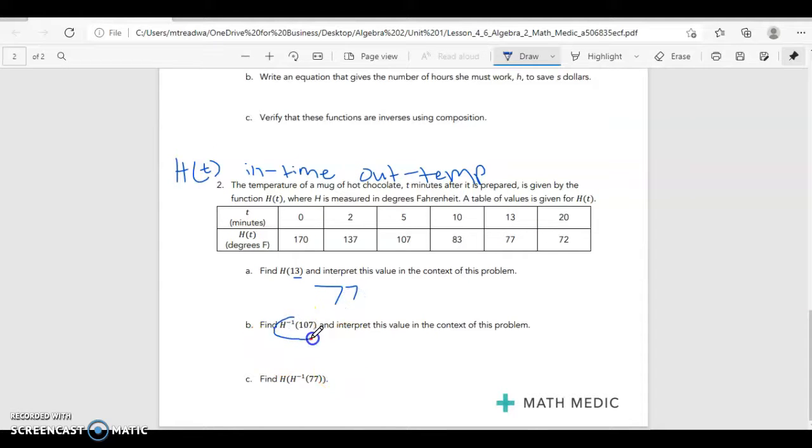Then on part B, I have my inverse of 107. So remember for our inverse, it swaps our input and our output. For our inverse the input would be temperature and the output would be time. So here my input is 107 and that is a temperature. So I'm looking at 107, my output would be minutes, my time T. So this output is 5.